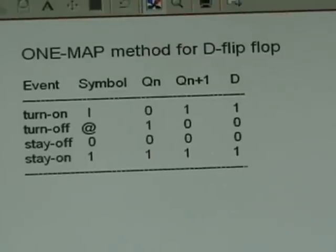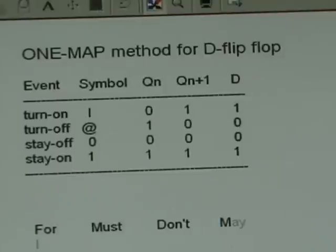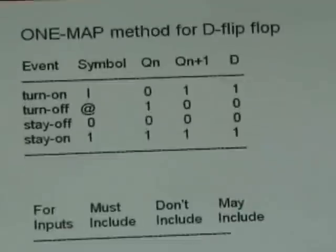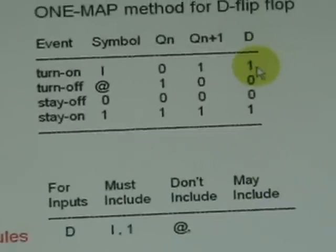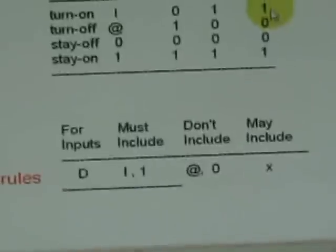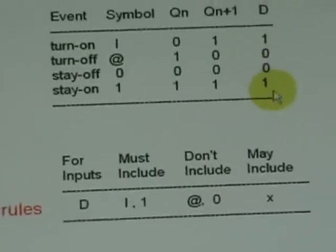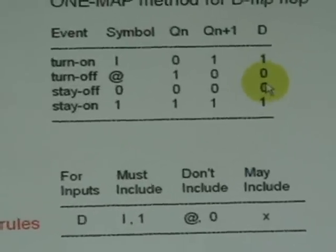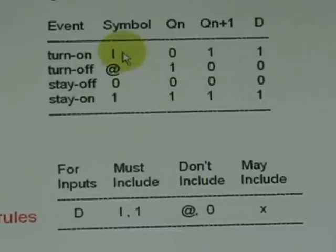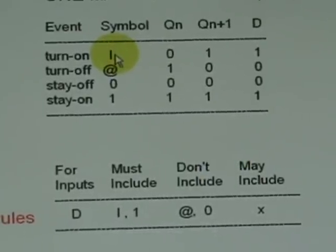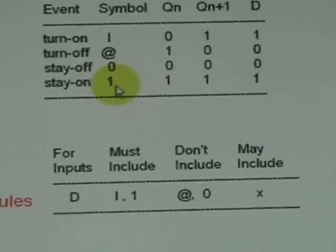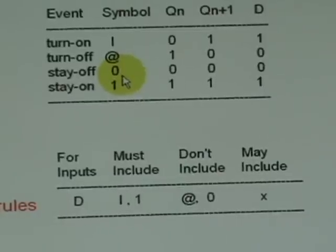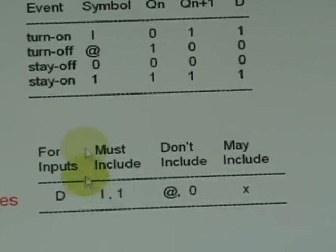In order to derive the input D of a given circuit according to here, when you group it in the usual map method, you enclose the one and you avoid the zero. So the corresponding one-map is you enclose the turn-on symbol and stay-on while avoiding turn-off and stay-off symbols. That is the meaning of this reading rule.